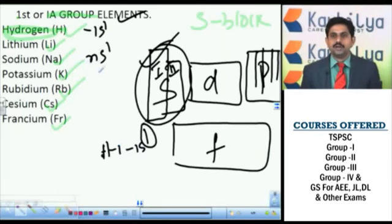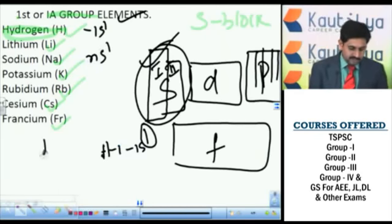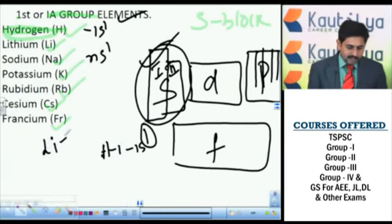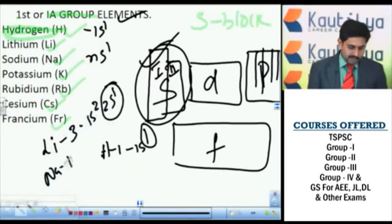Because of this similar electronic configuration, the general electronic configuration of first group elements is ns¹ — that is, one electron in the outermost orbit. For example, lithium has atomic number 3: its configuration is 1s² 2s¹. Sodium has atomic number 11: its configuration is 1s² 2s²...